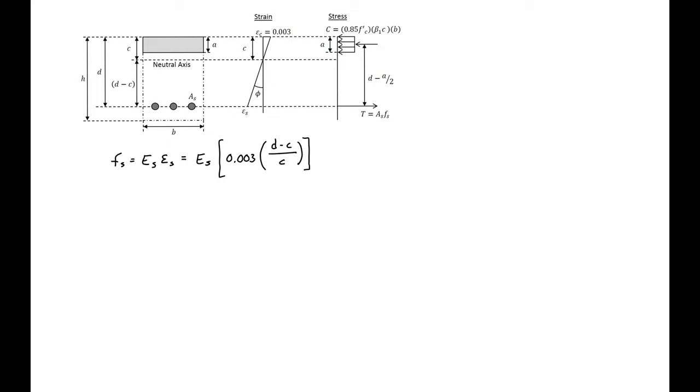We can start by finding an expression to represent our steel stress in terms of C. So we do this by using Hooke's law and then plugging in our expression which we found earlier for our steel strain. So we can plug in our values: we have 0.003 times 29,000 ksi times d, 18 inches, minus C over C, and we'll leave C in variable form for now. And then this will just be equal to 87 times 18 minus C over C.